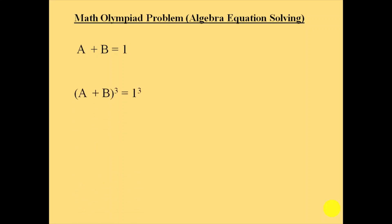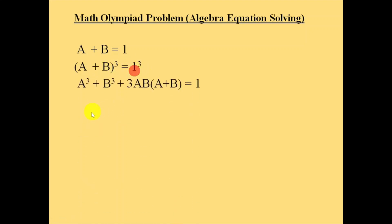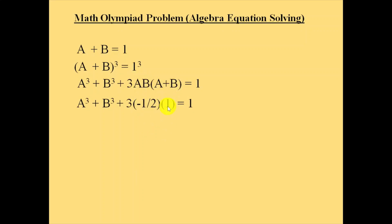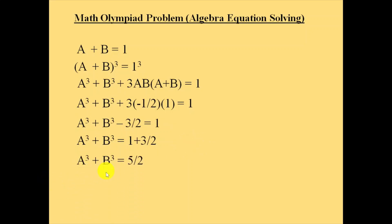Now take the equation a plus b equals 1 again, and this time apply cube on both sides. a plus b whole cube equals 1 cube. Expanding: a cube plus b cube plus 3ab into a plus b equals 1. Substituting ab equals minus 1 by 2 and a plus b equals 1, we get a cube plus b cube equals 1 plus 3 by 2, which gives 5 by 2.